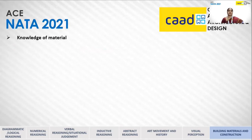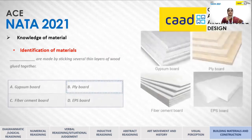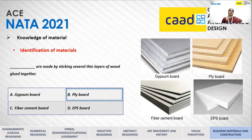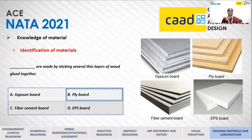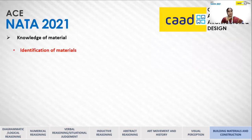The last topic is Knowledge of Materials. Identification of the material is very important. An image, definition, or question based on the manufacturing process of a particular material will be asked, and you have to select the appropriate material from the options given. For example, which material is made by sticking several thin layers of wood glued together? Plywood is the answer. It can also be asked as an MSQ question.